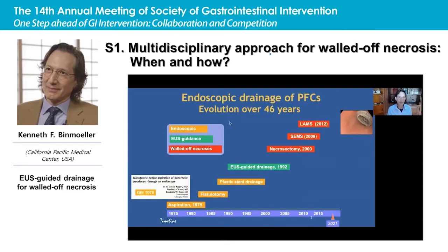Endoscopic drainage of pancreatic fluid collections has been an evolution over nearly half a century now. The first report of endoscopic drainage — in this case aspiration — was in 1975. This was followed by the development of endoscopic techniques to drain a pseudocyst, first with fistulotomy, later with placement of plastic stents. Then in 1992, the first use of endoscopic ultrasound to guide the drainage of a pseudocyst. I was working with Nipsohendra at the time and we reported this case.